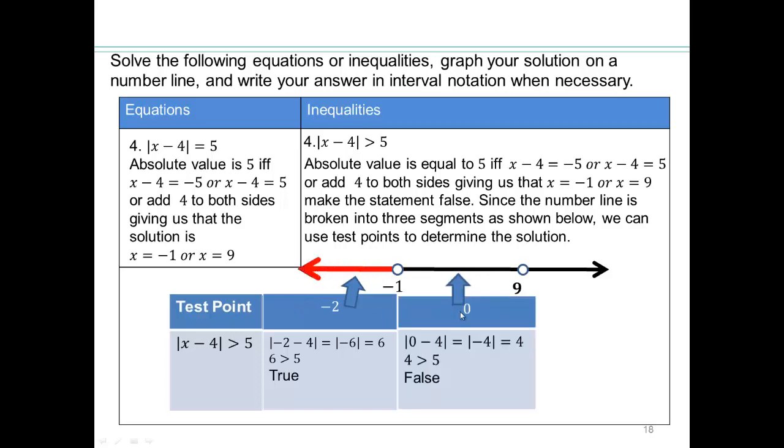All right, let's pick a number here, say 0. Absolute value 0 minus 4 is absolute value negative 4, which is 4. And 4 is bigger than 5 is a false statement. So that's not part of the solution. Let's pick a number from here. And you can see it's a true statement.